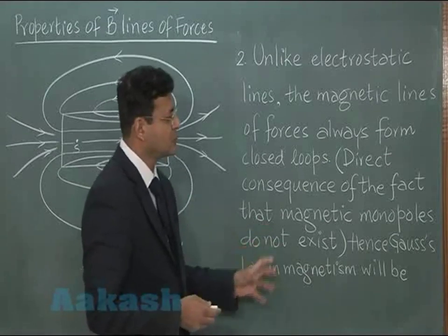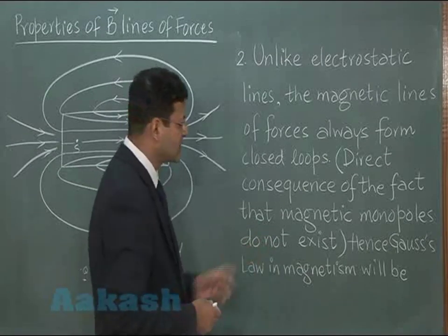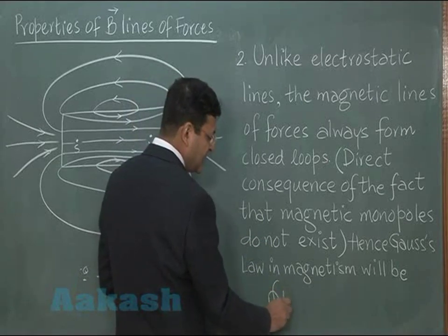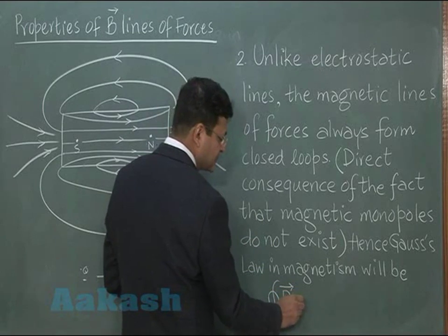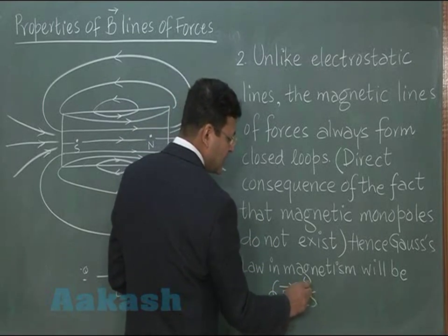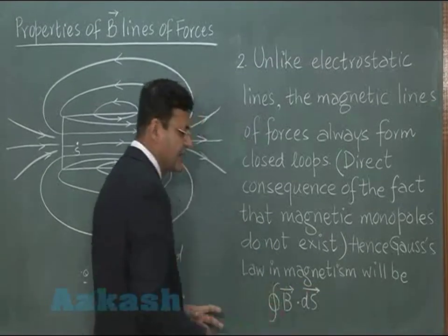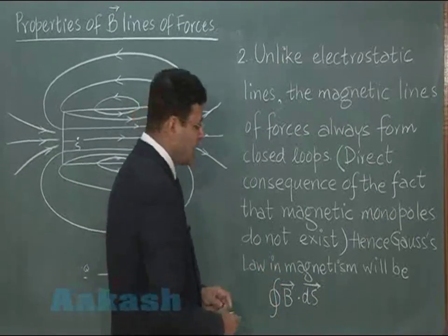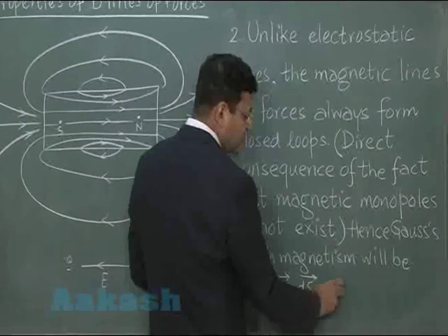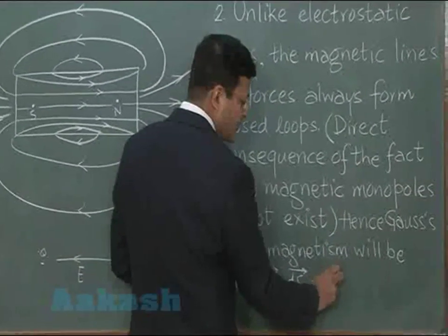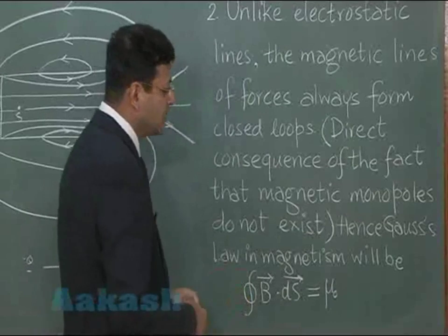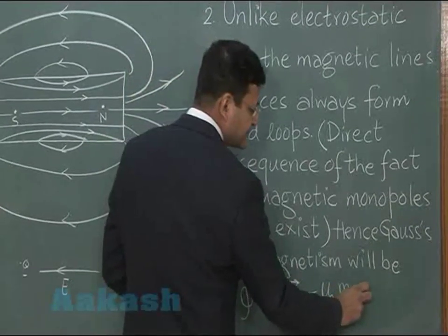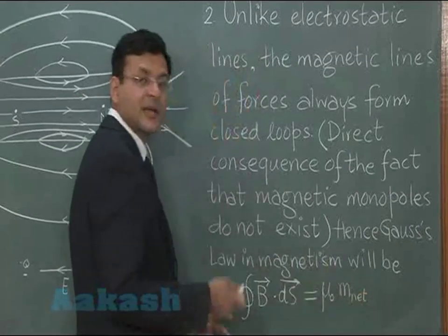Analogous to electrostatics, Gauss's law in magnetism is written as ∮ B · dS. Instead of 1/ε₀ we have μ₀, and instead of net charge q_net we write net magnetic charge. This is Gauss's law in magnetism.